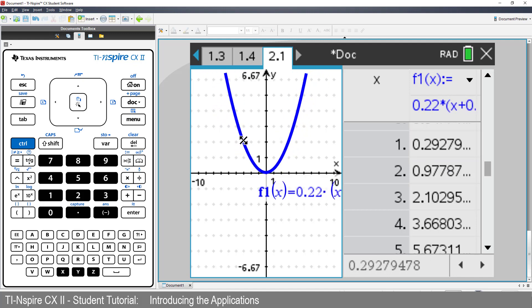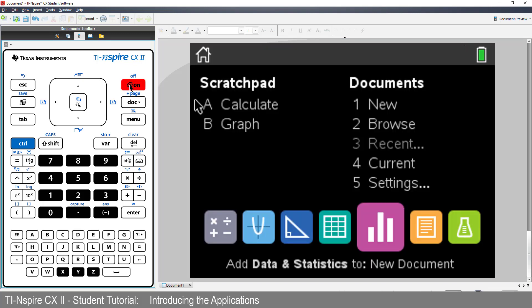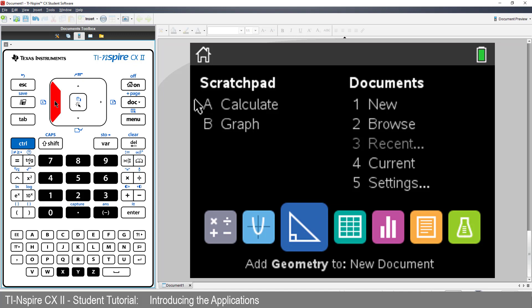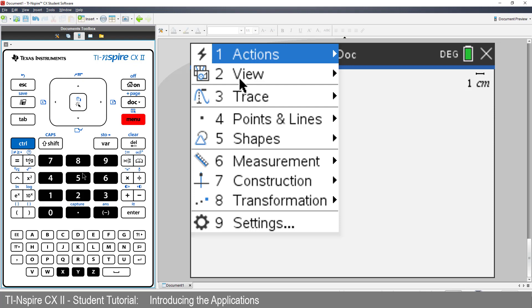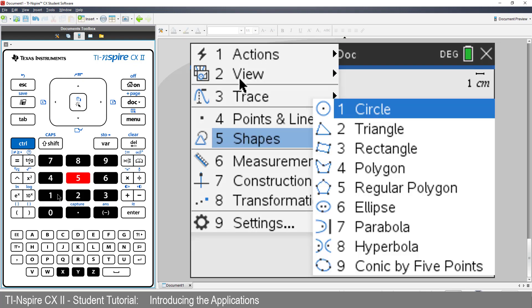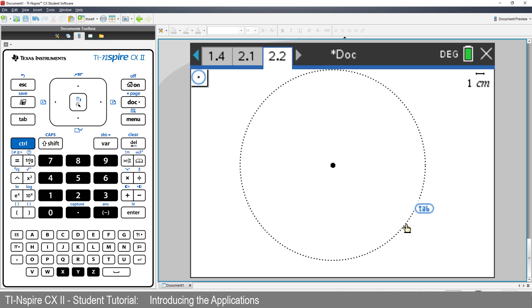Now let's insert a geometry application. Press the menu key, select shapes, and circle. We'll place the centre of the circle around about the middle of the screen. Then move the mouse to the side and click again to draw the circle. Now press the Escape key to release the circle tool.